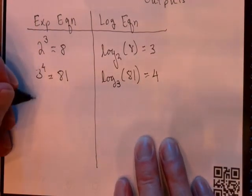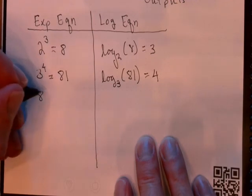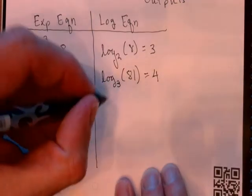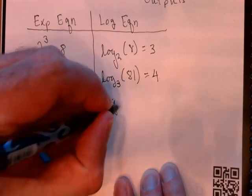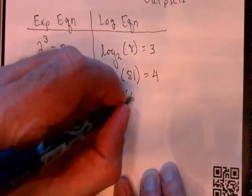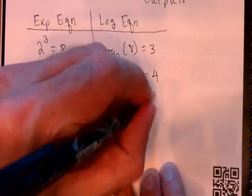And these subscripts here are telling us what the base of the exponential function is. We want to hit 81 using a power of 3. We use the fourth power. Something like this here. 8 power 2 equals 64. The equivalent log equation would be log base 8 of 64 equals 2.